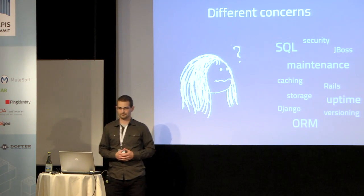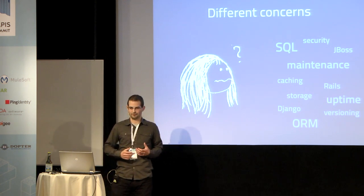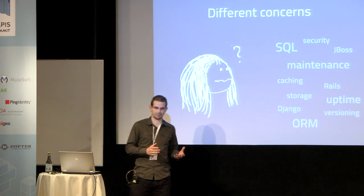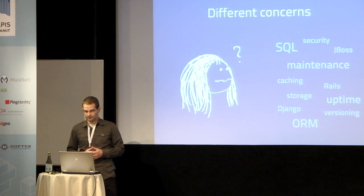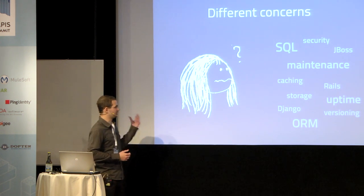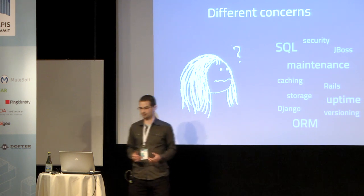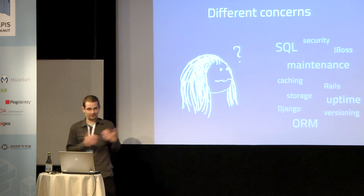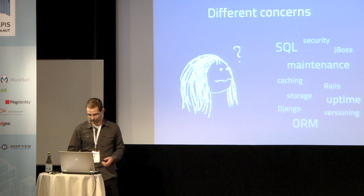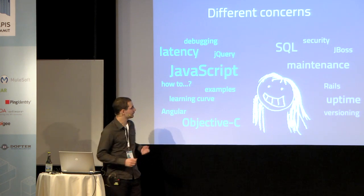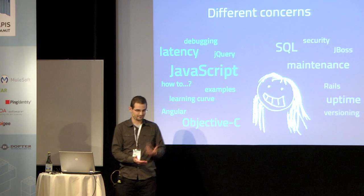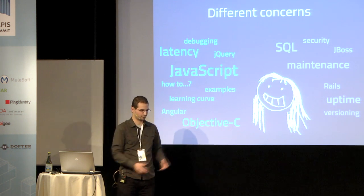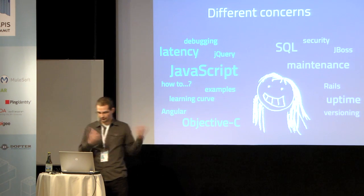She also has different concerns. I was one of those backend guys, and when I was designing an API, I was thinking in terms of frameworks, databases, database tables, ORMs, or versioning. But Clientina doesn't really relate to those things. She thinks in terms of JavaScript and examples, and getting the stuff done — how to do this, how to do this, I want to list those things, how can I quickly put that into my Angular application?